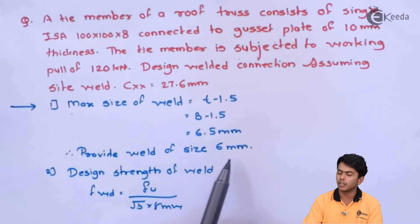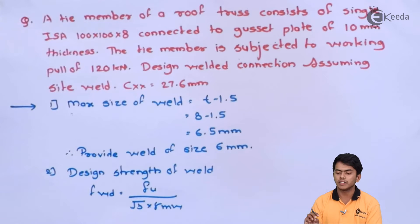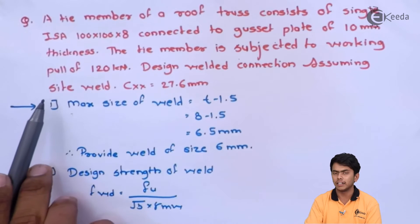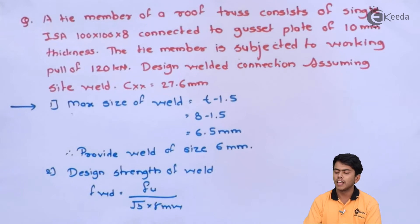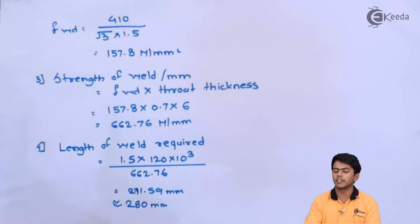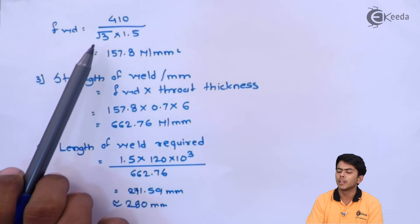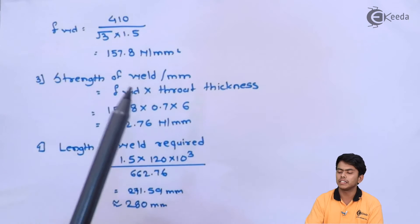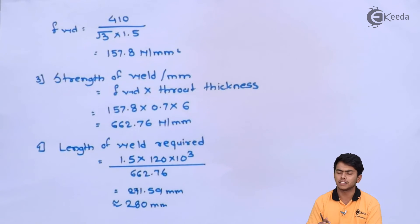Next step is design strength of weld. According to our IS clause, FWD is given as FU upon root 3 into gamma MW. So we will get 157.8 N/mm².